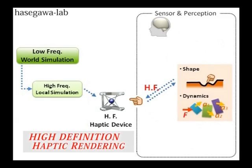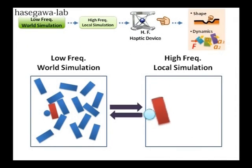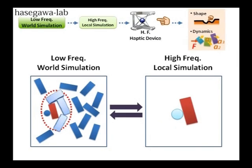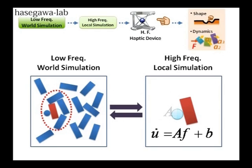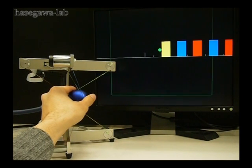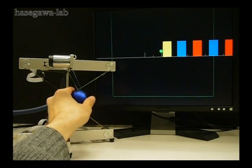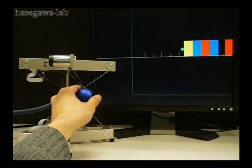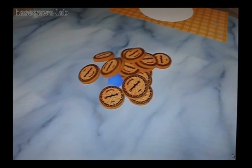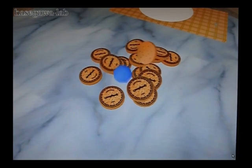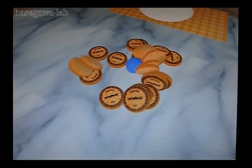Humans perceive dynamics of objects from the relation between applied forces and motion of objects. Presentation of this relation requires high frequency update and consideration of the effects of all objects that are in contact with the objects touched by hands. So, we propose to approximate the relation between forces and motion into a linear model. Without the linear model, the consistency between local and global side is lost. With the linear model, all motions of objects are accounted for. As a result of low frequency update of global simulation, haptic interaction with lots of objects is realized.